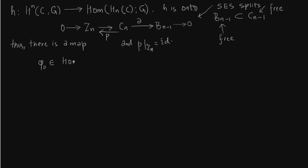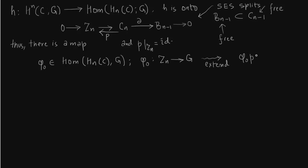We start with a map φ₀ in the dual of the homology group. HN consists of ZN over BN, so this map acts from ZN to G. We want to use map P constructed before to extend this map to CN to G. The map φ₀ from ZN to G vanishes on BN because it is a homomorphism on the homology group, and homology is ZN modulo BN. Therefore we can extend it to a map on CN which still vanishes on the boundaries.